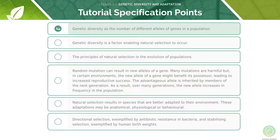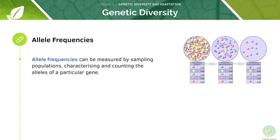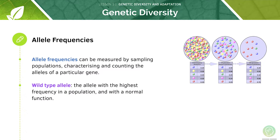First we will define genetic diversity. Genetic diversity is the measure of the number of different alleles of a particular gene within a specific population — we can also call this the gene pool. Allele frequencies can be measured by sampling populations and characterising and counting the alleles of a particular gene. The allele with the highest frequency in the population with a normal function is referred to as the wild type allele.